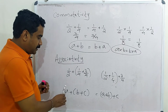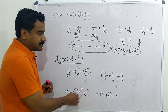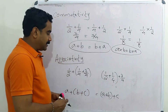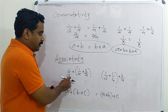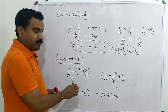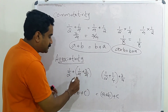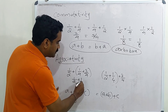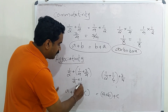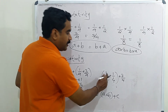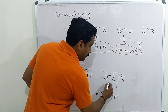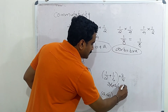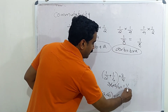Now the associativity property: A plus (B plus C) equals (A plus B) plus C. For example, consider 1 by 2 plus 1 by 4 plus 3 by 4. First grouping: 1 by 4 plus 3 by 4 is 1, then 1 by 2 plus 1 is 1 and a half. Second grouping: 1 by 2 plus 1 by 4 is 3 by 4, then 3 by 4 plus 3 by 4 is also 1 and a half. Both give the same result.